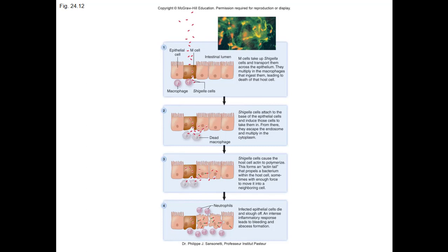The transmission is usually a fecal-to-oral route, sometimes via fecally contaminated food or water; humans are generally the only source. Overcrowding and hot, humid conditions can favor transmission. Daycare facilities and summer camps see small Shigella outbreaks, and at the start of school in late August or September there can be outbreaks because kids aren't washing their hands after using the bathroom.